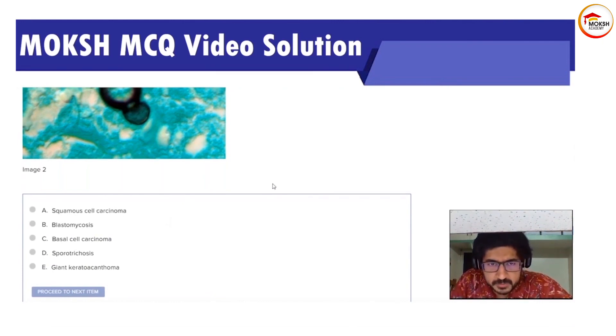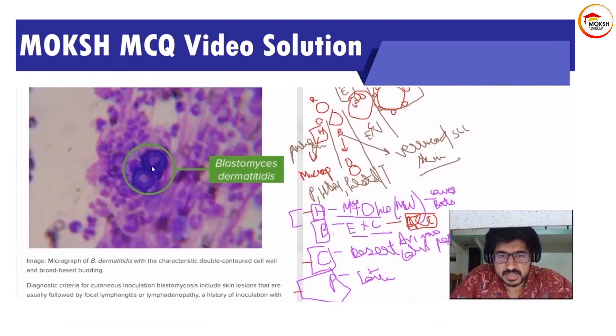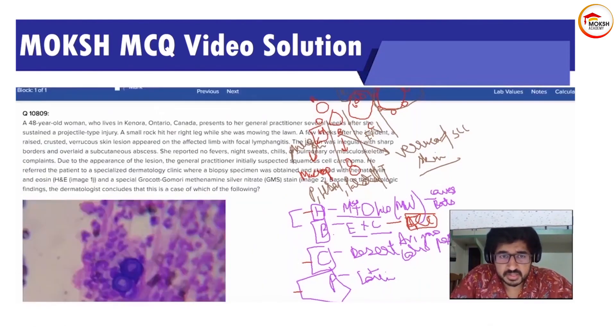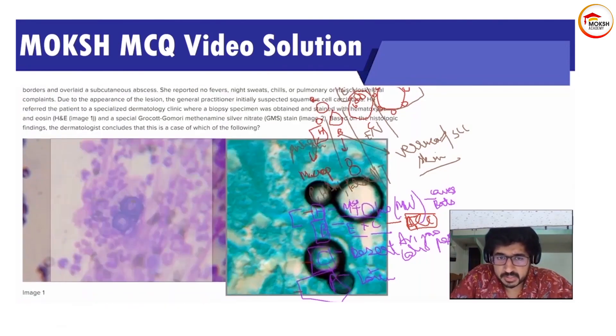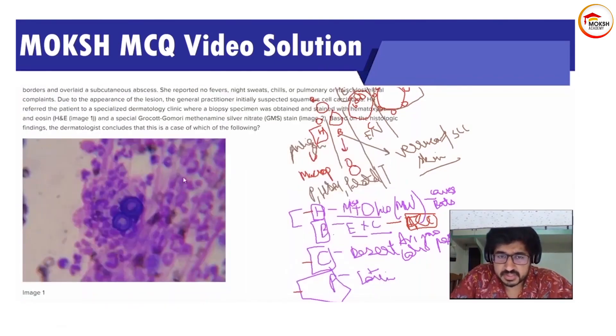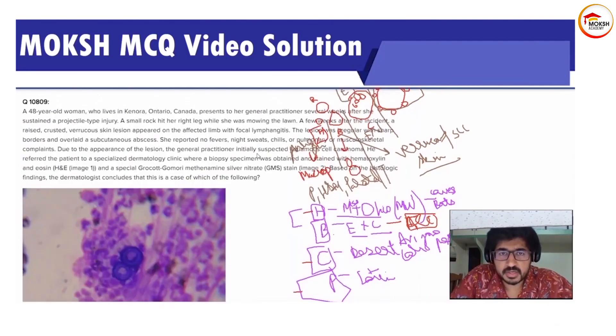See this diagram, see what I have drawn over here. Blastomycosis has broad-based budding, as I mentioned—broad-based budding blastomycosis, which is almost similar to your RBC inside.